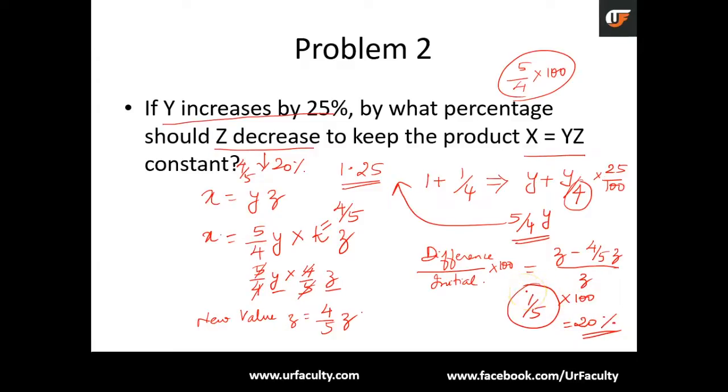You can also quickly find it out if you know how to appreciate this particular number. 4 by 5 can be written as 1 minus 1 by 5. And 1 by 5 is basically the value that is bringing down from our earlier understanding of how to calculate a change if a particular value comes down by 20 percent. If a particular value has to come down by 20 percent, it is basically 1 minus 1 by 5, or basically 0.8. It's the same technique.